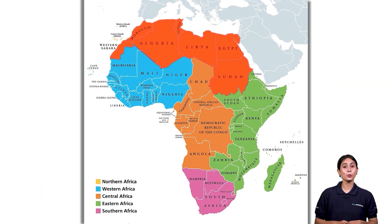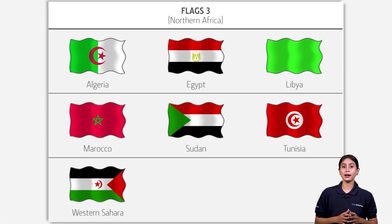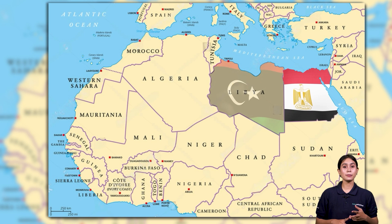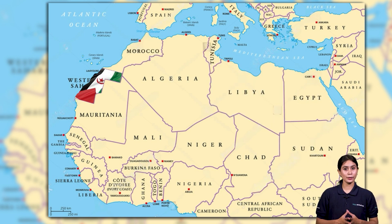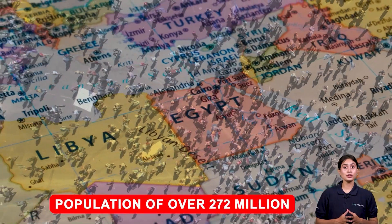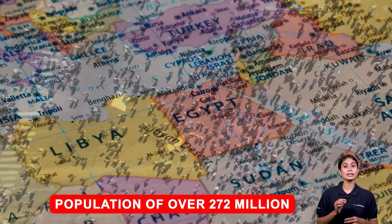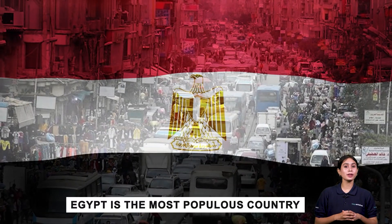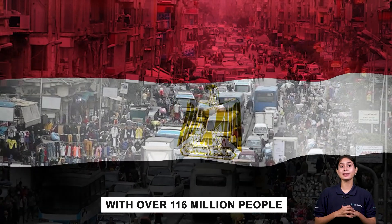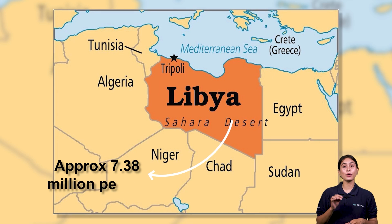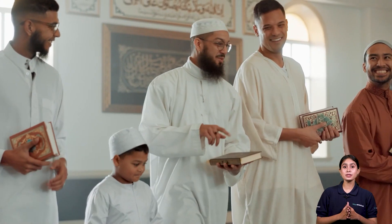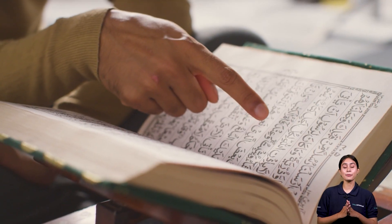Let's first begin with Northern Africa. Northern Africa comprises seven countries: Algeria, Egypt, Libya, Morocco, Sudan, Tunisia, and Western Sahara. It has a population of over 272 million. Egypt is the most populous country with over 116 million people. The least populous is Libya with approximately 7.38 million people. All countries are Arab and Muslim, with most people speaking Arabic and practicing Islam.